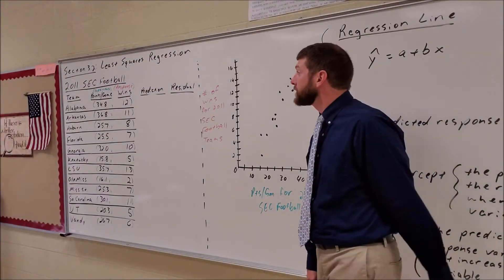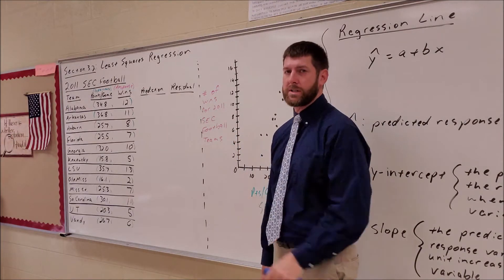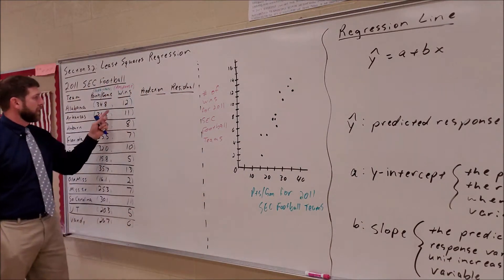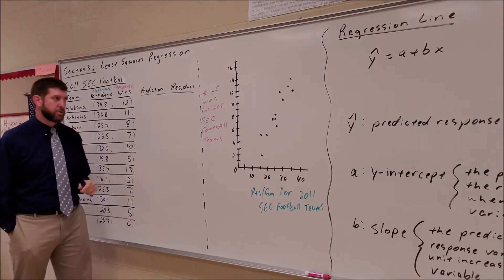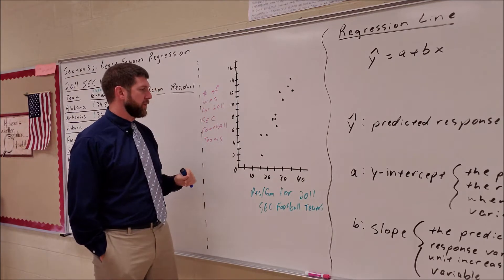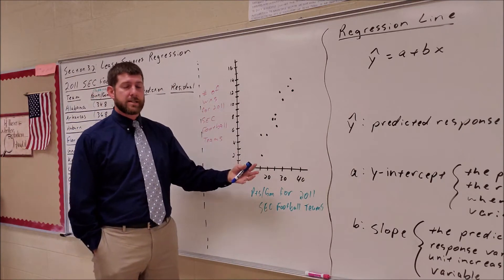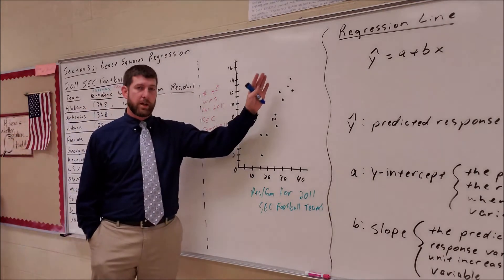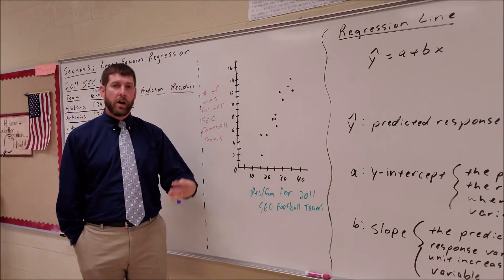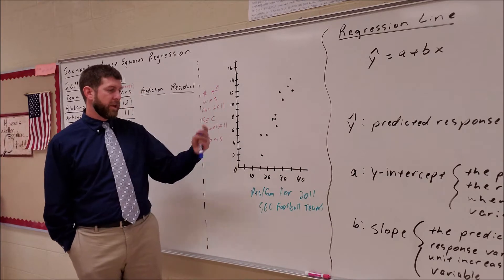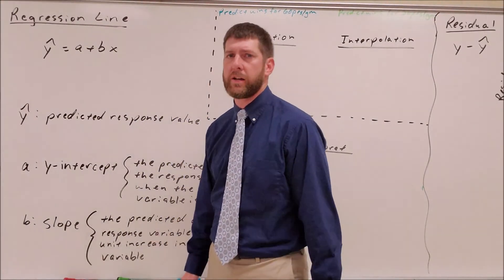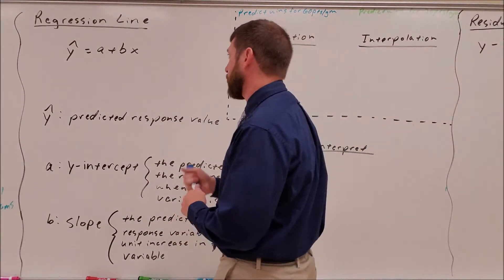Good morning. Today we're going to continue our discussion on two-variable quantitative data, looking at SEC football teams and how many points they scored per game and using that as a predictor for how many games they should win. Last lecture we talked about how to organize that graphically with a scatter plot. Today we're going to take it a step further and actually build a prediction line — what we call a regression line.